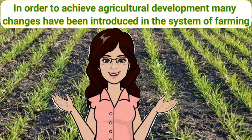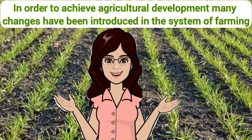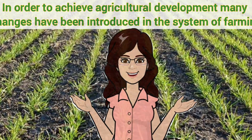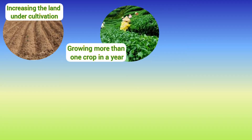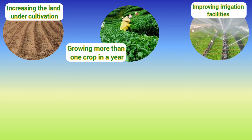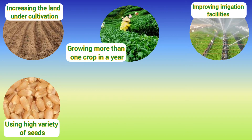In order to achieve agricultural development, many changes have been introduced in the system of farming, such as increasing the land under cultivation, growing more than one crop in a year, improving irrigation facilities, and using high variety of seeds.